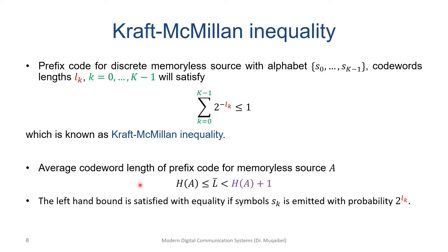The second part of the lecture focuses on the Kraft-McMillan inequality. Given a discrete memoryless source with a prefix code, where the source generates symbols S0 up to S_{K-1} with codeword lengths l_k, the Kraft-McMillan inequality states that if the code is prefix, it must satisfy: the sum of 2^{-l_k} ≤ 1. Conversely, if this inequality is satisfied, we can construct a prefix code with those lengths.